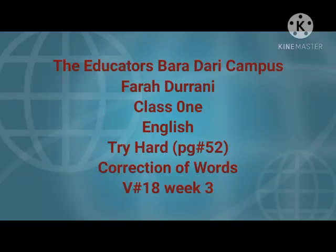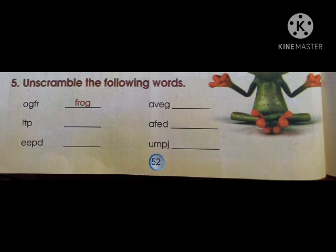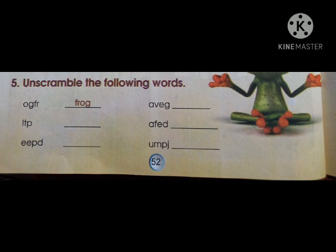Assalamu alaikum, this is Farah Durani and it's an English lesson for Grade One. Today we are going to do question number five of the topic 'Try Hard.' The question is: unscramble the following words. The words are given and what we have to do is make them correct.